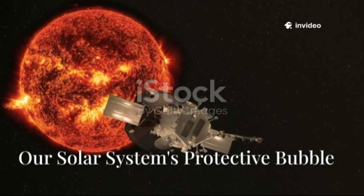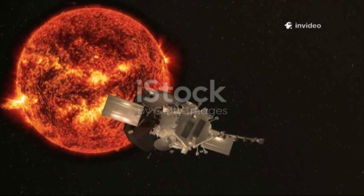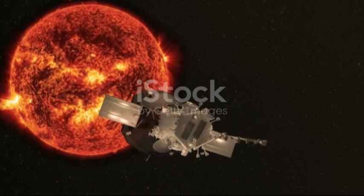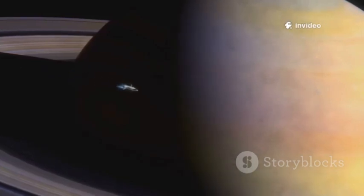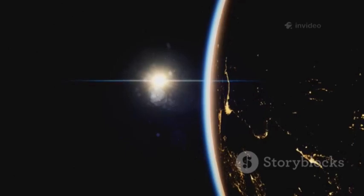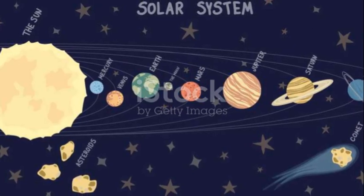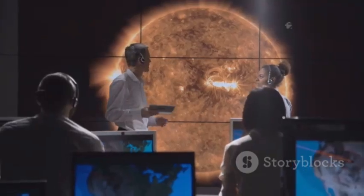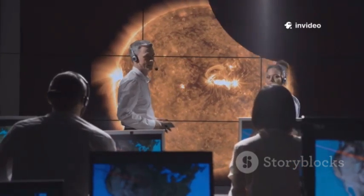The heliosphere is our solar system's shield, carved out by the sun's solar wind in the thin soup of the interstellar medium. This bubble, over 100 times the Earth-sun distance, protects us from cosmic rays that could damage DNA and disrupt electronics. Without it, life on Earth would be far more vulnerable. For decades we only had theories about the heliosphere's shape. Most imagined a smooth comet-like bubble. But science demands data, not just models.